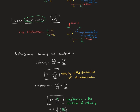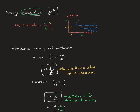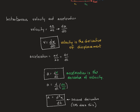Since velocity is the derivative of displacement, acceleration is a derivative of a derivative. Combining these gives us the second derivative: acceleration = d²x/dt². You can get your CAS calculator to find this directly, so you don't have to find velocity first and then differentiate again. The acceleration is the second derivative of displacement.